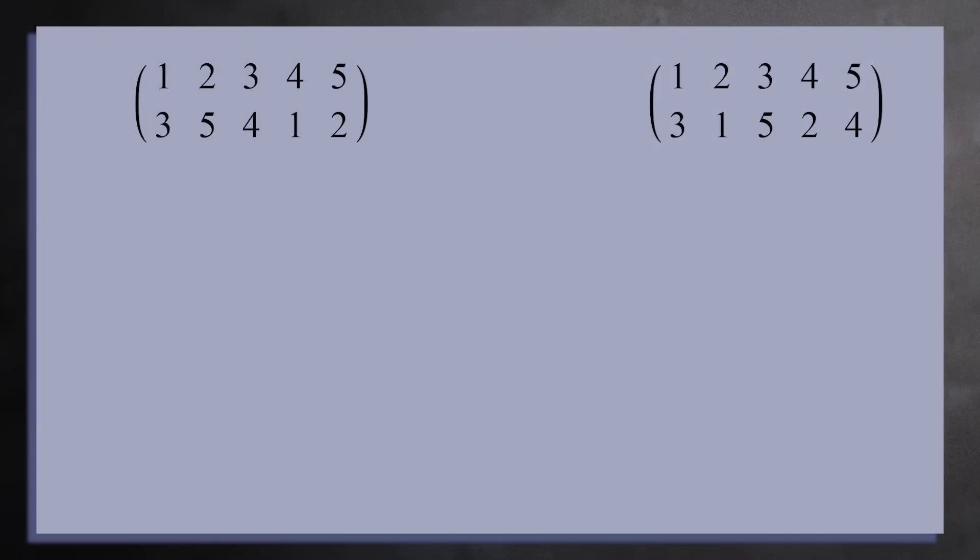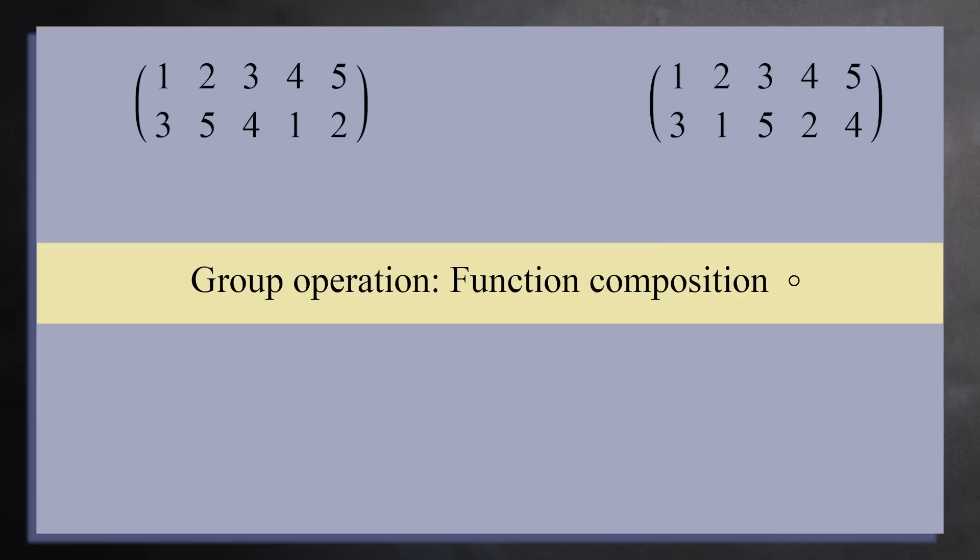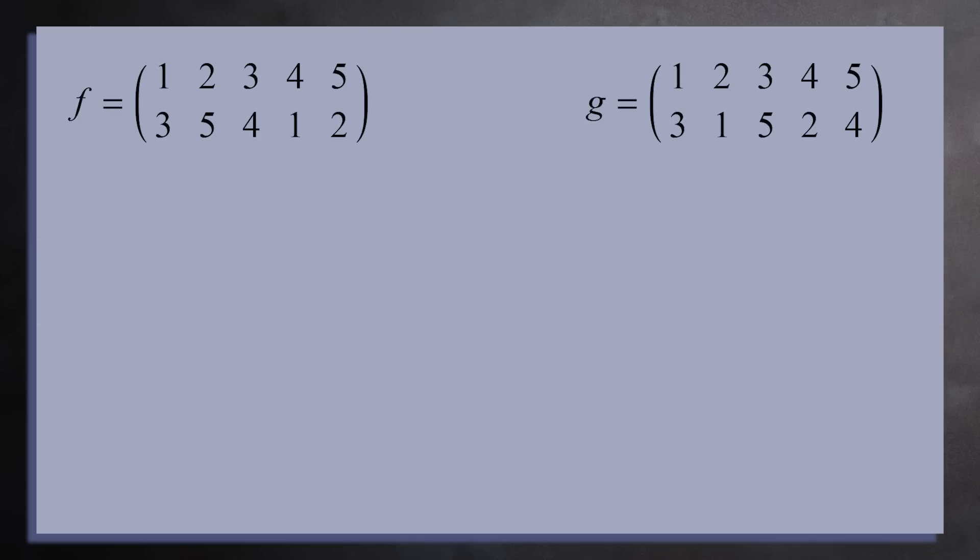Look at these two permutations on five elements. Each permutation can be thought of as a function where the number on top is the input, and the number on bottom is the output. If you think of a permutation as a function, then the group operation is function composition. If we call the first permutation f, the second permutation g, and treat them as functions, then f times g gives you another permutation. You can find the product by plugging in each of the five numbers.